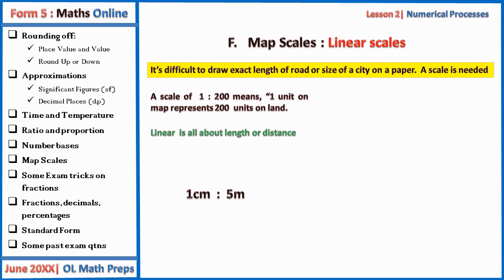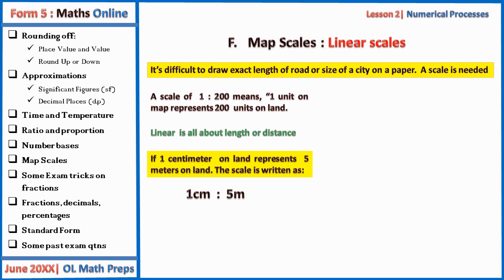If one centimeter on the map represents five meters on land, the scale is written as 1 cm to 5 m. But this scale has not been simplified because we have different units. We convert to the smaller unit: five meters is 500 centimeters. Canceling out the centimeters gives a simplified scale of 1 to 500. Note that 100 centimeters make one meter, and 100,000 centimeters make one kilometer.